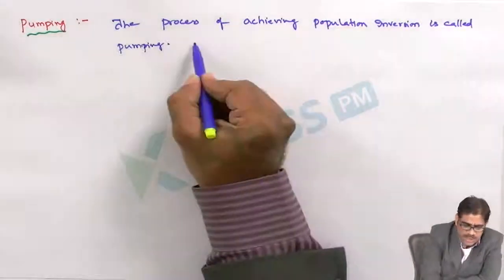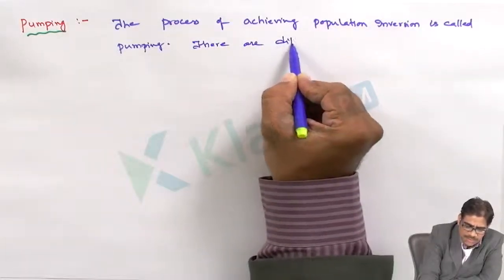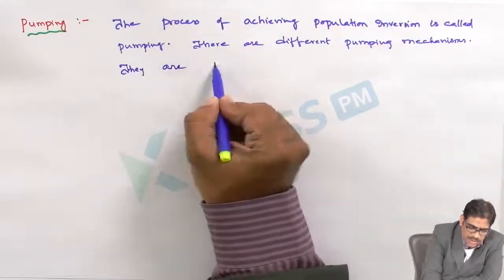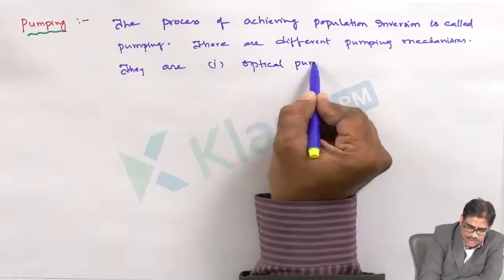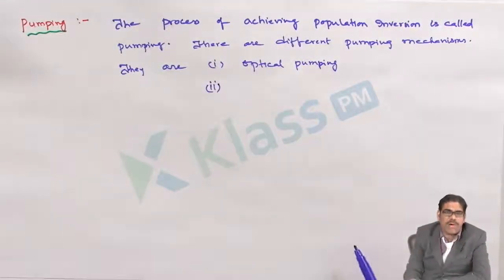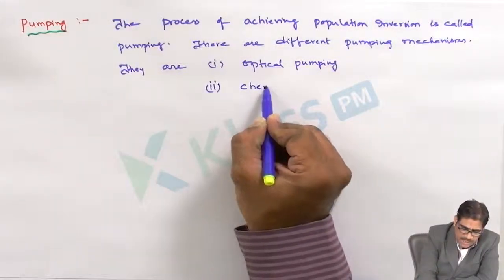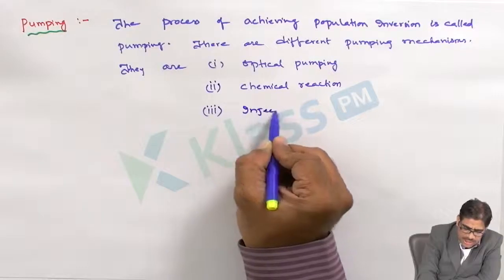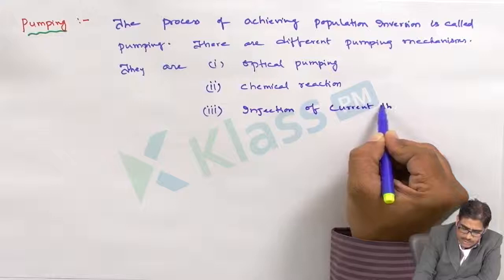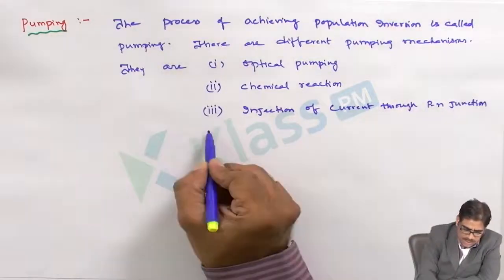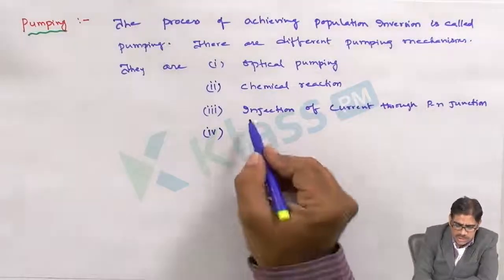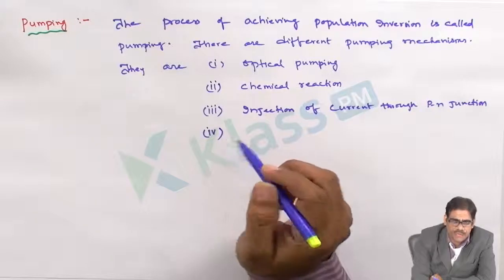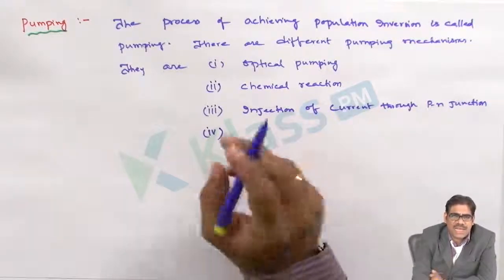There are different pumping mechanisms. They are: number one, optical pumping; number two, chemical reaction; number three, injection of current through P-N injection; and number four, corresponding to liquid gases — that is electric discharge through gases. Depending upon the different types of pumping available and the type of laser, we can select the appropriate kind of pumping.